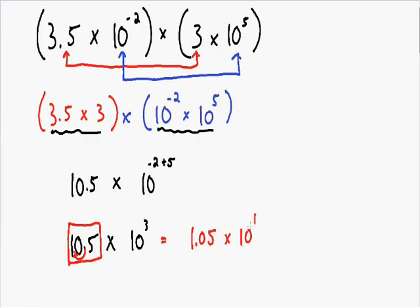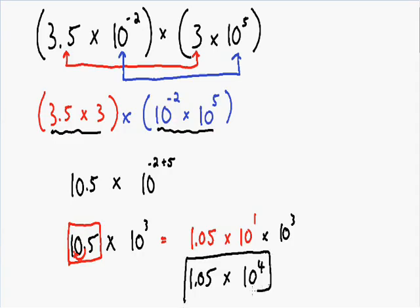1.05 times 10 to the 1 is the same thing as 10.5. And we can't forget that we still have the 10 to the third on the right side, so we need to multiply by 10 to the third. Once again, we have two exponents with the same base being multiplied, so we can add the exponents. We have an exponent of 1 and we add it with the exponent of 3. 1 plus 3 is equal to 4. So this is our final answer: 1.05 times 10 to the fourth.